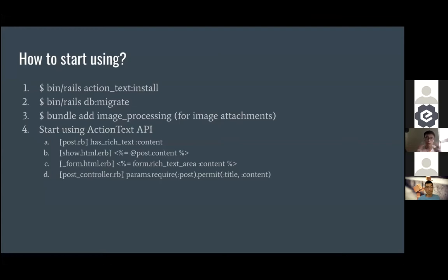Because there's a migration file, we have to run `db:migrate`. Then if we want to support image attachments, we need a gem called `image_processing`, which we need to install. After that, for our model, we need to use this method called `has_rich_text :content`.